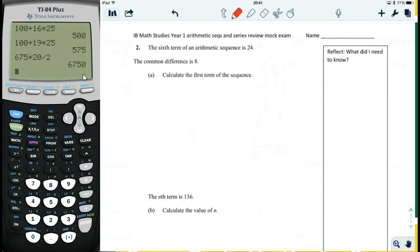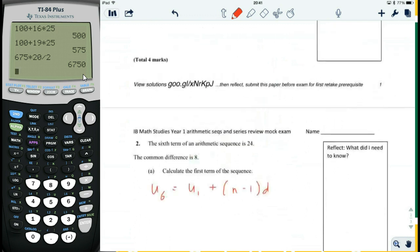Next page. The sixth term of an arithmetic sequence is 24. Calculate the first term. Well, the sixth term is equal to the first term plus n minus 1 times d. Just one thing. Let's go back here for a second.